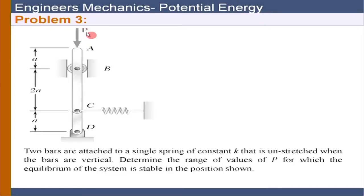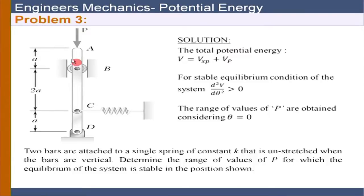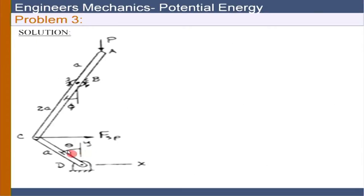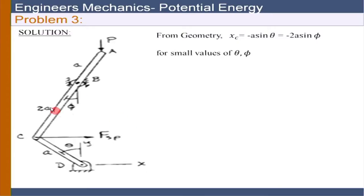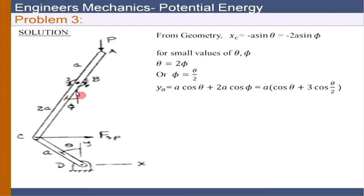The stable equilibrium is completely determined by the spring stiffness k and the geometry. For some values of P the system is stable, but beyond that value it becomes unstable. We disturb the system by a small amount theta to examine whether disturbance grows or decays. Due to geometry, if this angle is theta, then phi satisfies a sin theta equals 2a sin phi. For small angles, phi equals theta over 2.